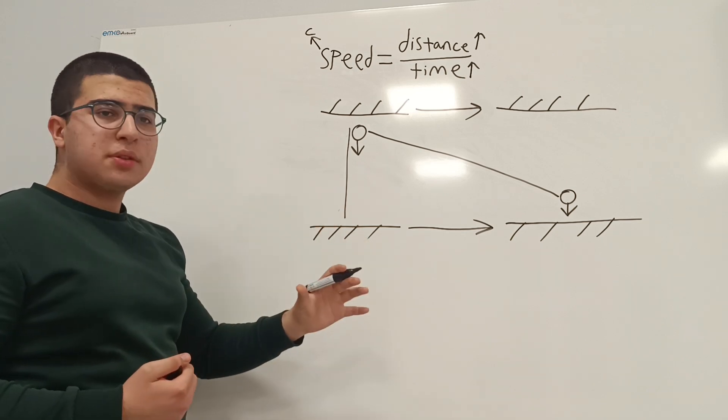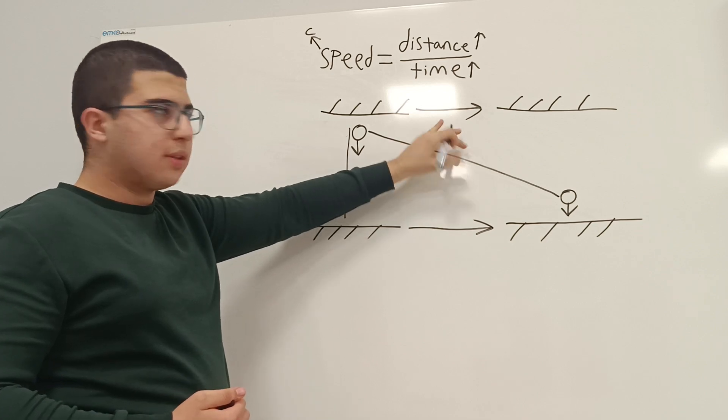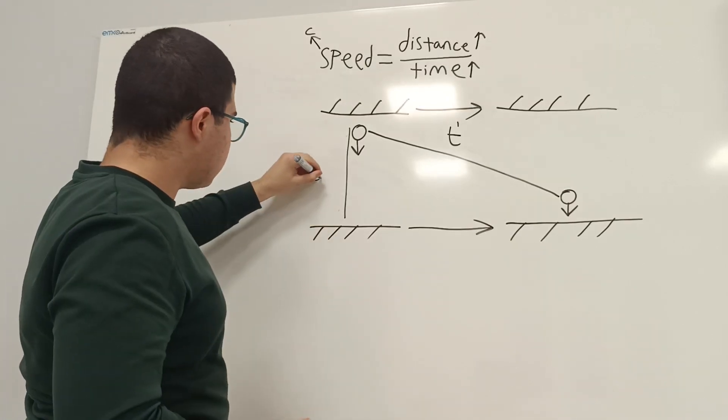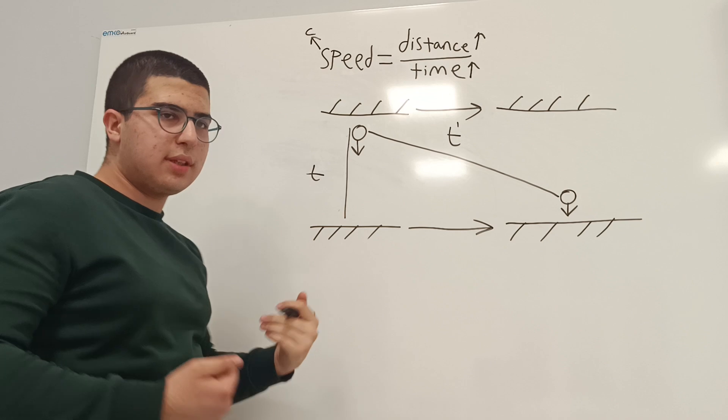And now, we're going to say that the time that they experience is t prime. And the time they experience is t. Time we experience is t.